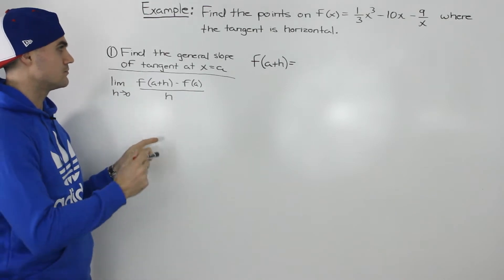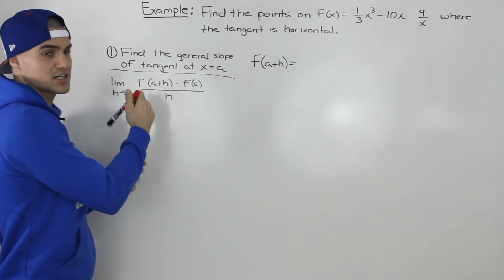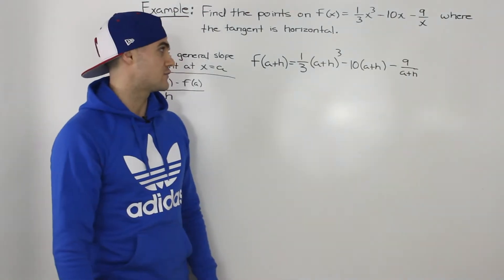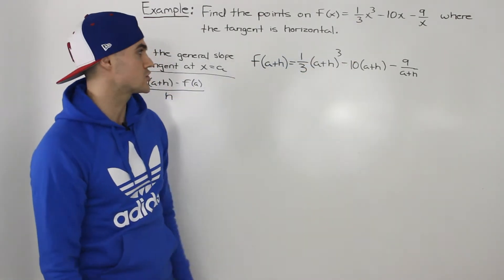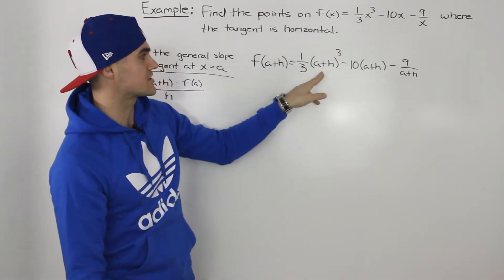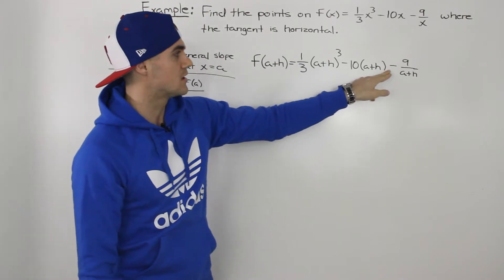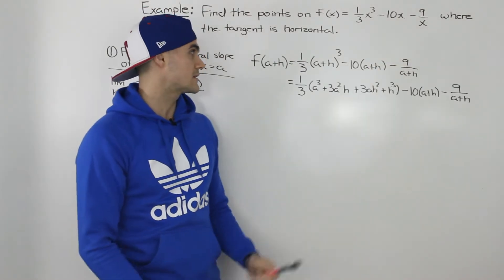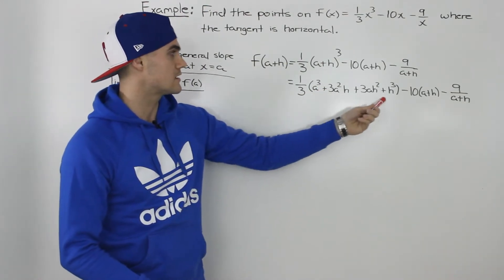Because it's going to take a lot of algebra to find f(a+h), I'm going to work it out on the side. To find f(a+h), we plug in (a+h) for all the x values in the function, giving us (1/3)(a+h)³ minus 10(a+h) minus 9 over (a+h). The next step is to expand that (a+h)³ term.